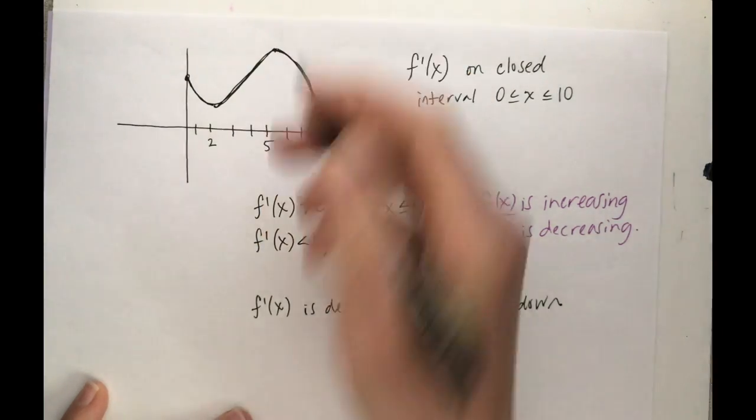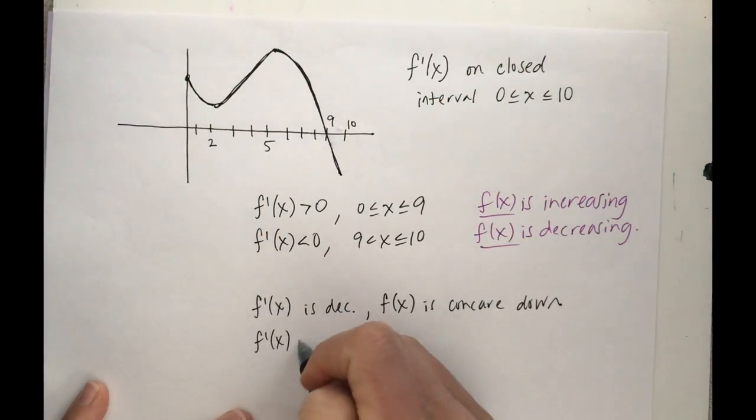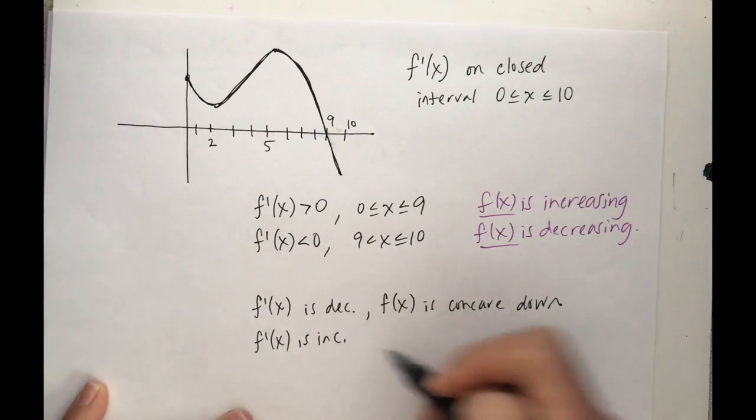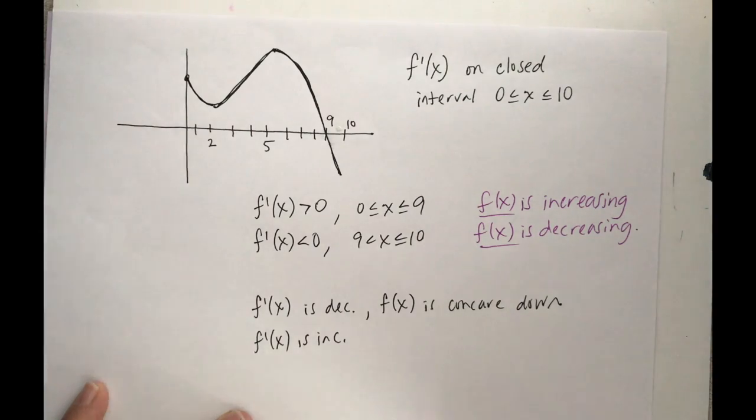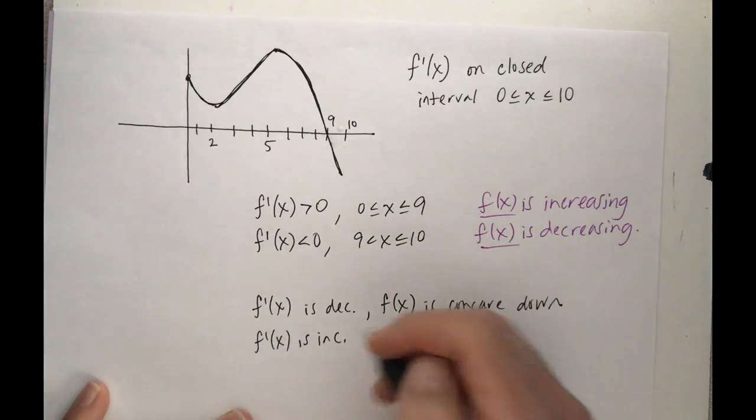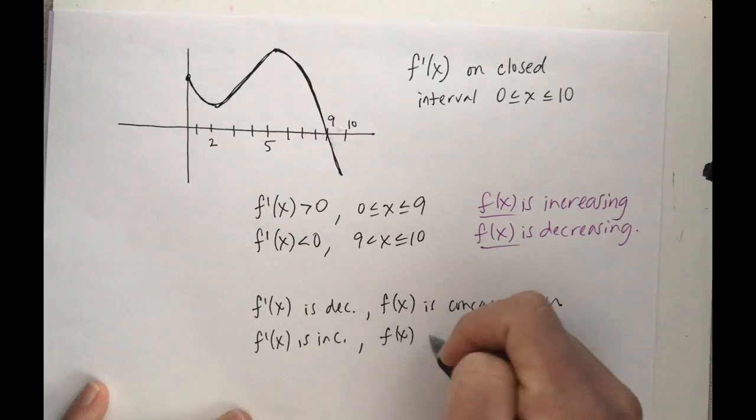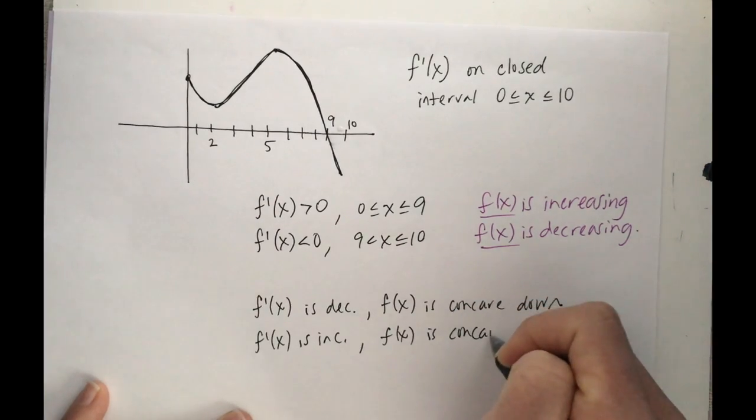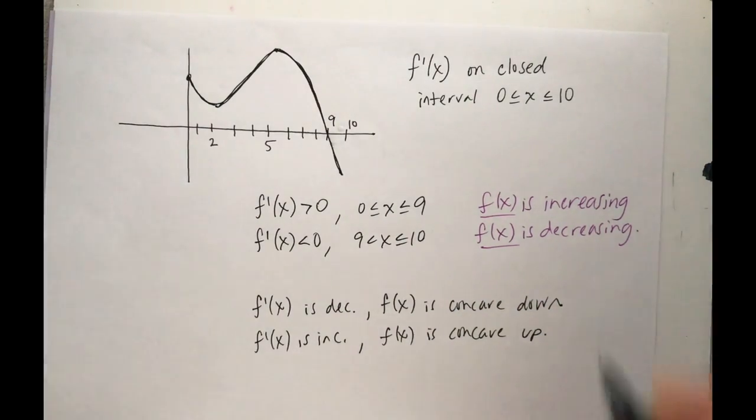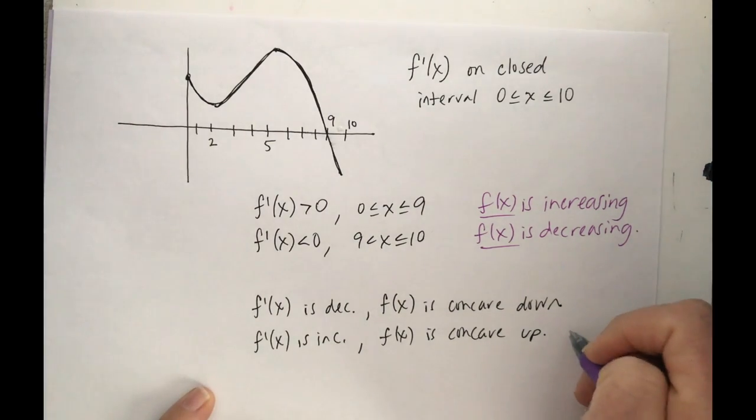Now on those parts where f'(x) is increasing, when f'(x) is increasing, that means my consecutive slopes are increasing. And we talked about if my consecutive slopes are increasing, that's the definition of concave up. So f(x) is concave up. So I've got this little interval here from, let's say, 2 to 5, I'm concave up. Everywhere else I'm concave down.